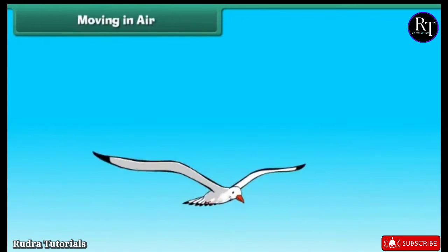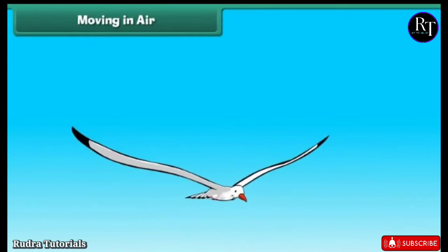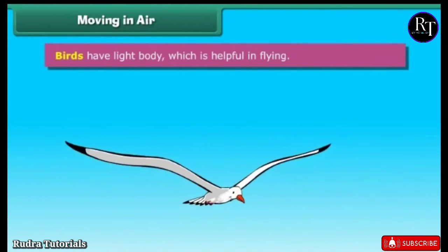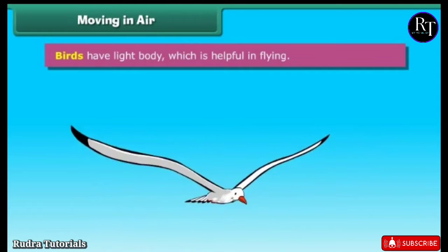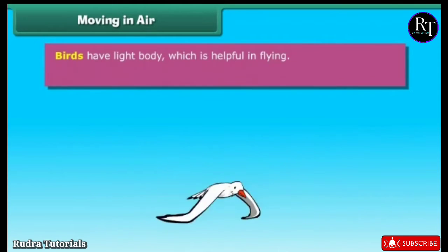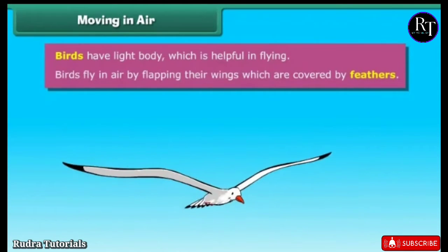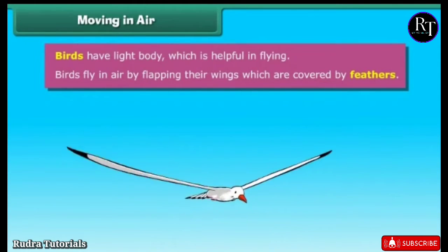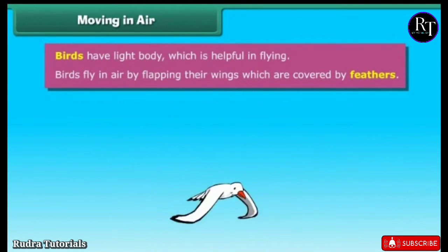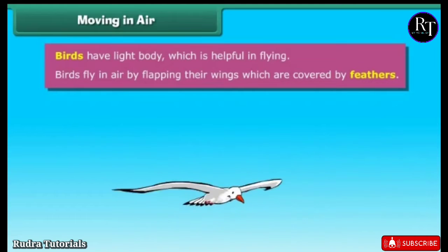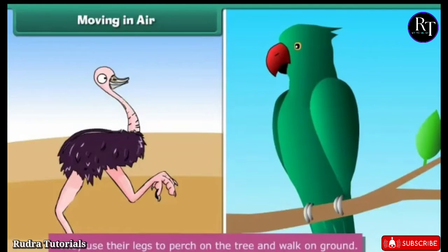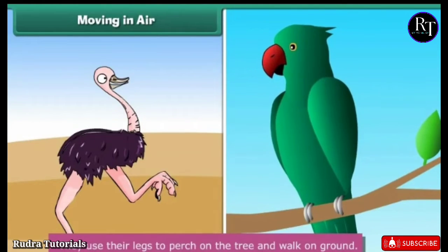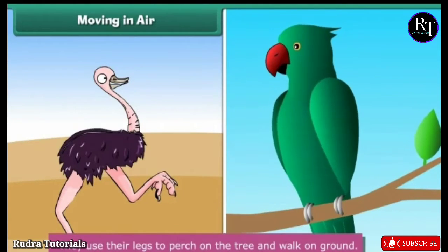Birds have a light body which is helpful in flying. Birds fly in air by flapping their wings, which are covered by feathers. They use their legs to perch on trees and walk on the ground.